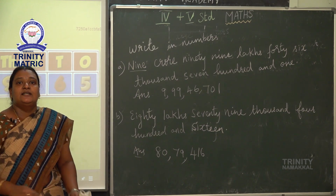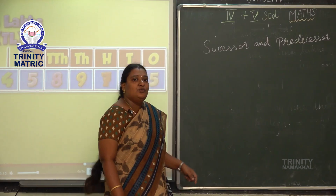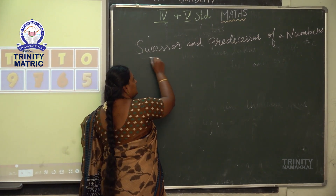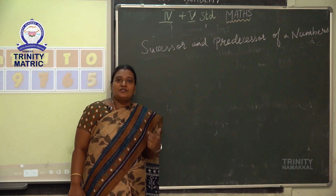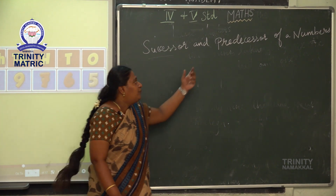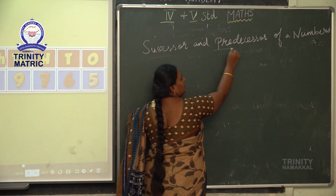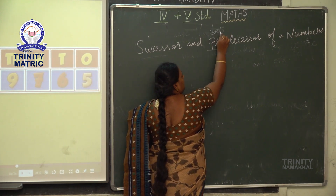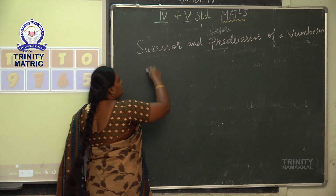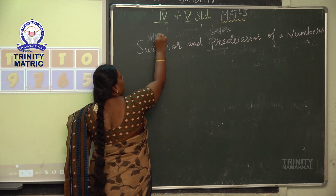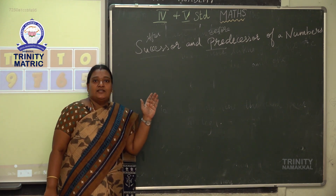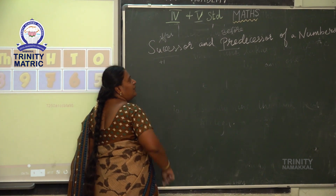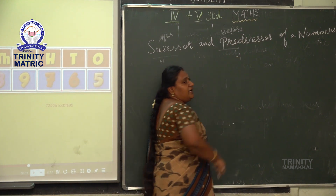Next, we are going to see the successor and predecessor of a number. What is successor? Successor means the next number. Predecessor means the number before. 'Pre' means before. Successor means after number. In simple words, successor of a number equals the given number plus 1, and predecessor means we subtract minus 1.